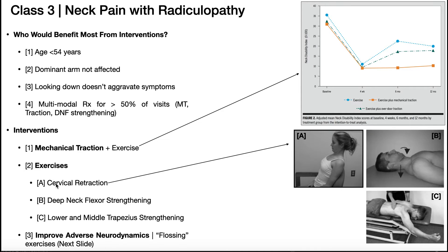What exercises might we do? For example, cervical retraction in sitting helps strengthen the deep neck flexors. A progression of that is the deep neck flexor strengthening in supine — the same position used for the deep neck flexor endurance test — which can be used as a test, outcome measure, and goal. Since you're now going against gravity, it requires stronger deep neck flexors, and this has evidence for helping with cervical radiculopathies.